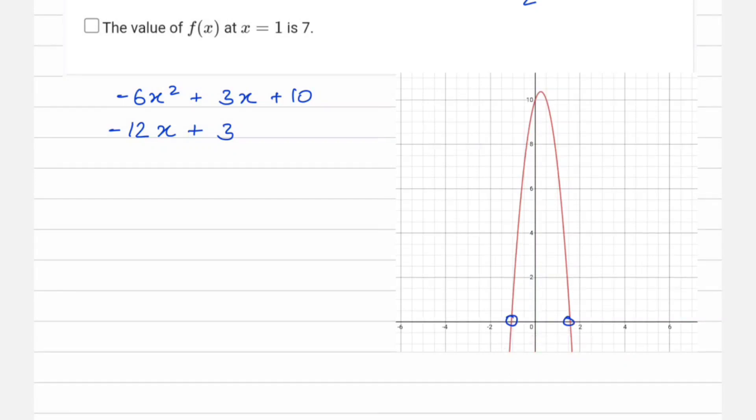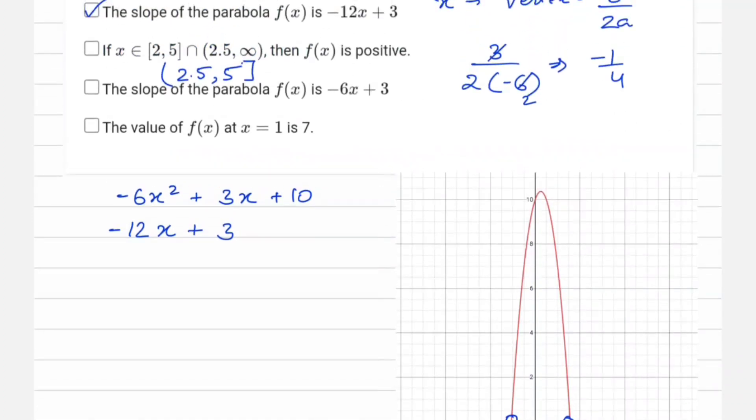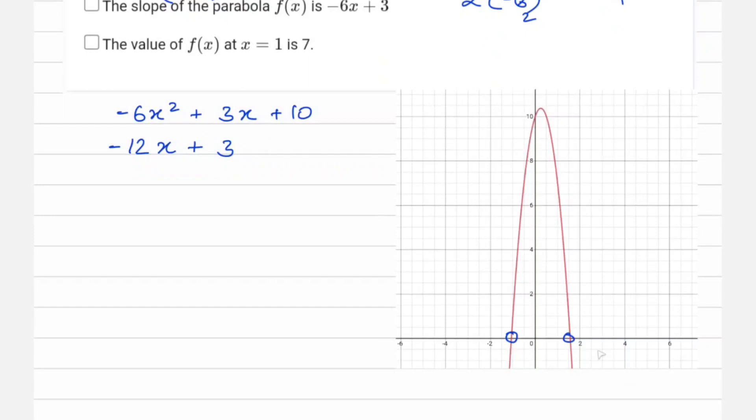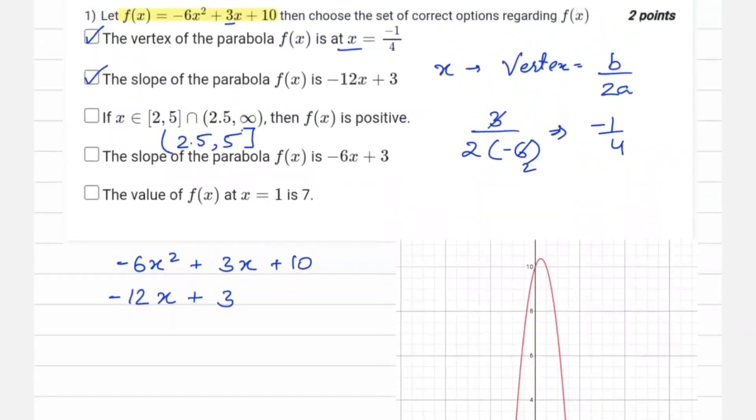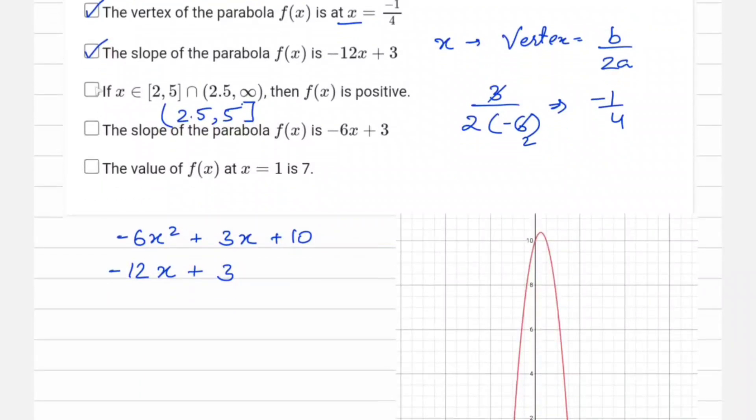Right, so after 2 the graph is negative, not positive, which implies this option is not correct.